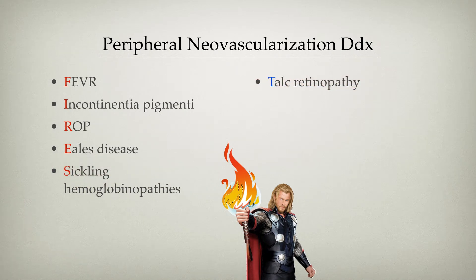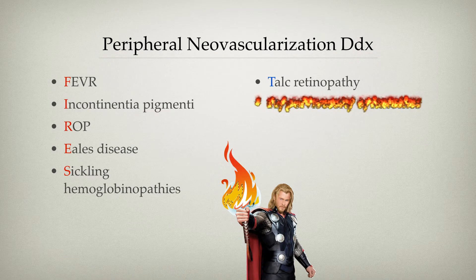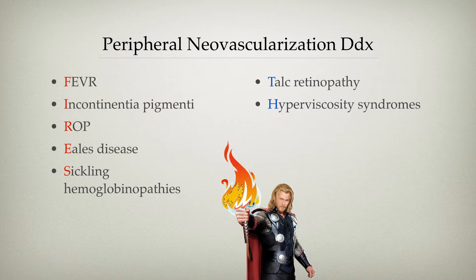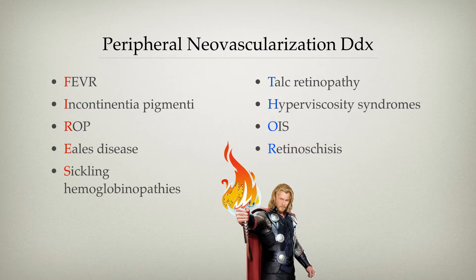The S stands for sickling hemoglobinopathies. The T in Thor stands for talc retinopathy. H is for hyperviscosity syndrome, such as Waldenström's macroglobulinemia, monoclonal gammopathy of unknown significance, or multiple myeloma. The O stands for ocular ischemic syndrome, and the R is for retinoschisis.